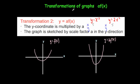In this video we're going to look at transformations of graphs and we're going to look at f of x. So if we had y equals x squared and y equals 2x squared, that's an example of where we've multiplied a function by a number — we've multiplied it by 2.